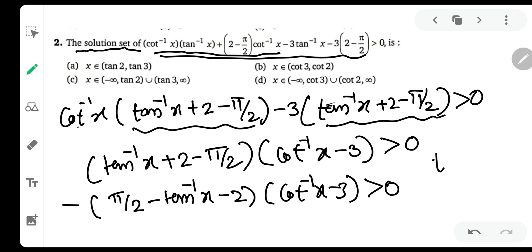Now, as we all know tan inverse x plus cot inverse x is equal to π by 2. Therefore, π by 2 minus tan inverse x is cot inverse x. So what we will get is minus cot inverse x minus 2 and cot inverse x minus 3 is greater than 0.